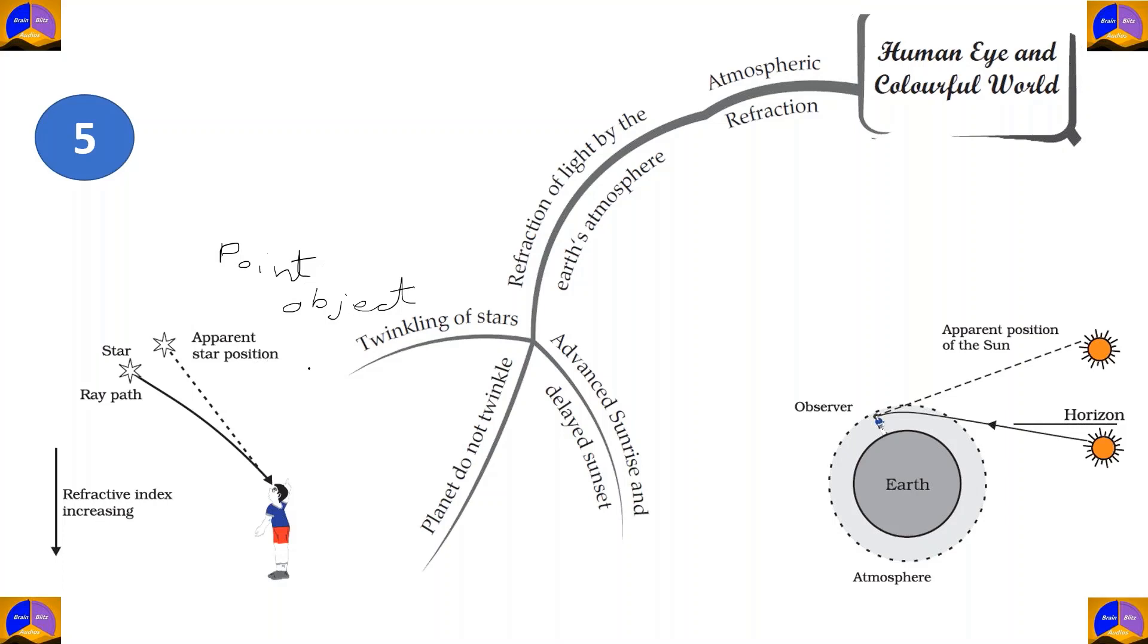Now, this is true for stars, but why not for planets? They are small objects too, to us, but they do not twinkle. The reason being is that stars are very far away and they are considered as point objects, while planets are a lot closer and they are extended objects. And that's the reason why stars twinkle.